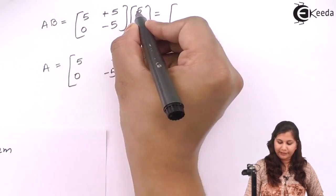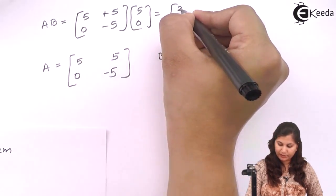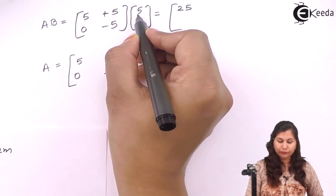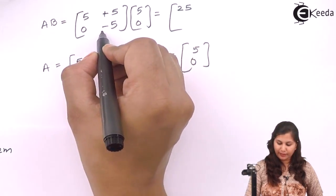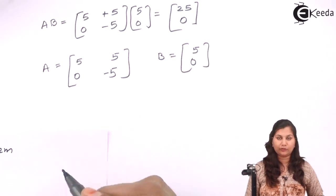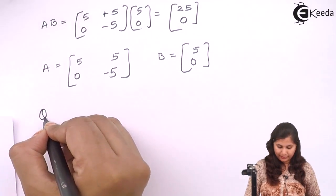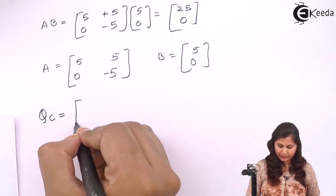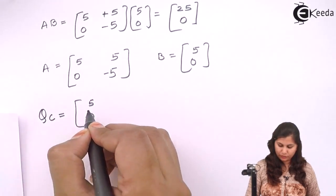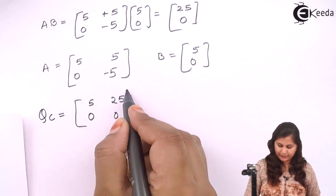Calculating AB: 5×5 = 25 plus 5×0 = 0, so the first element is 25. Then 0×5 = 0 plus (-5)×0 = 0, so the second element is 0. Therefore AB equals [25, 0]. Our matrix QC will be B = [5, 0] and AB = [25, 0].